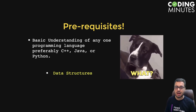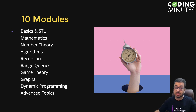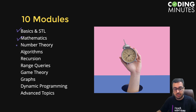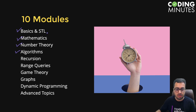We have divided this course into 10 modules. Each module has four to five sections. The 10 modules are: Basics, which gives a quick recap of data structures and space-time complexity; Mathematics, covering linear recurrences, matrix exponentiation, and big integers; Number Theory, covering permutations and combinations, theorems in number theory, GCD, and extended Euclidean; and Algorithms, covering divide and conquer, brute force, backtracking, and greedy techniques.